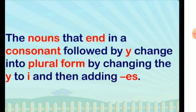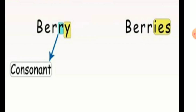If a noun ends in 'y' and there is a consonant before the 'y', we change the 'y' to 'i' and then add 'es'. We can understand this with an example: 'berry' — the last letter is 'y', and since there is a consonant before 'y', we change it to 'i' and add 'es', giving us 'berries'.